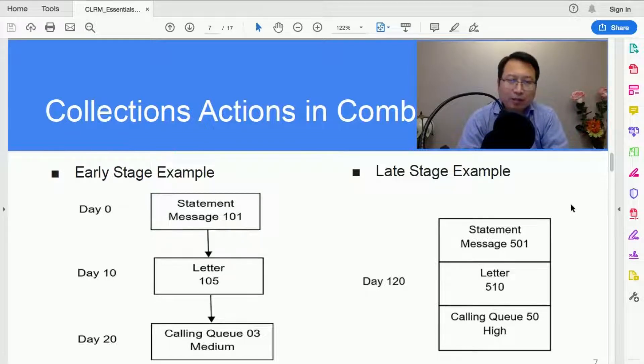Then you give another 10 days. On day 20, if the customer still doesn't pay, you put the customer in the calling queue with ID 03. This is assigned a priority of medium, so then you need to have the call center staff begin to call the customer. This is an example of early stage delinquent accounts.